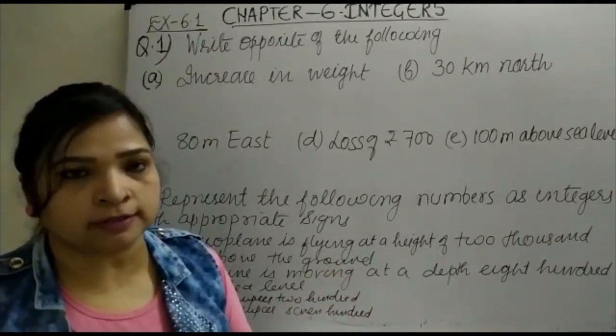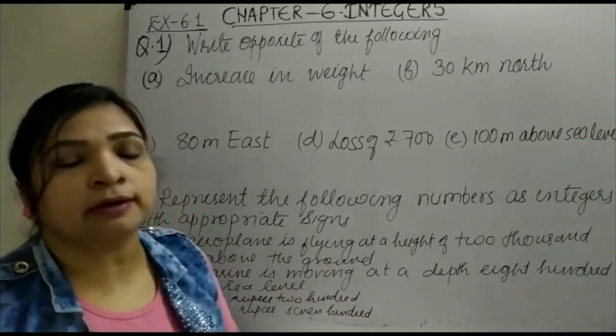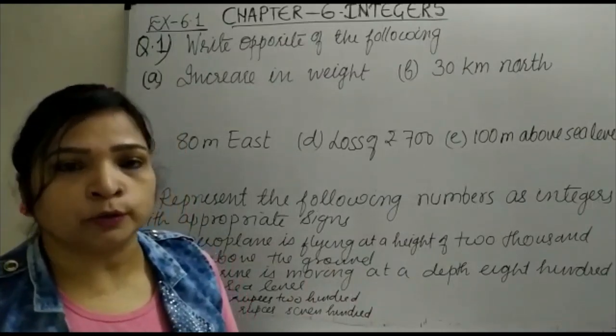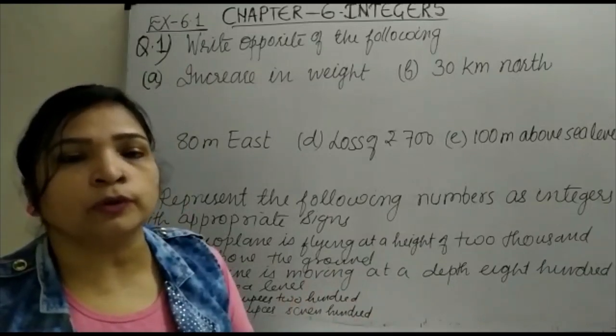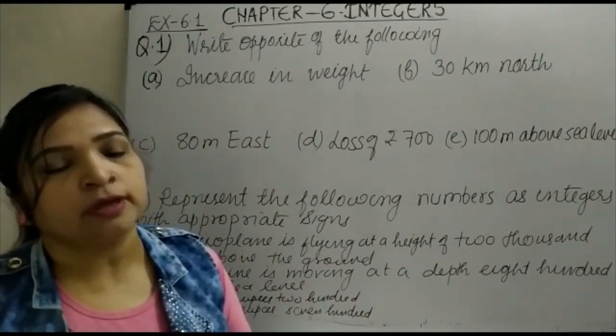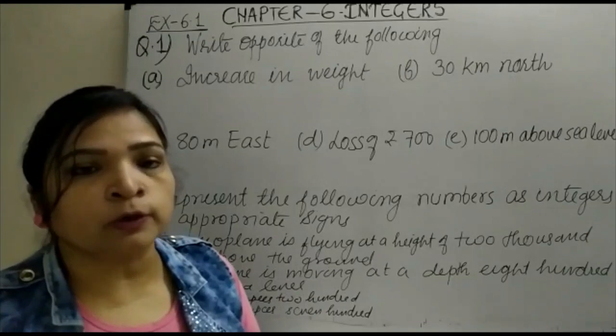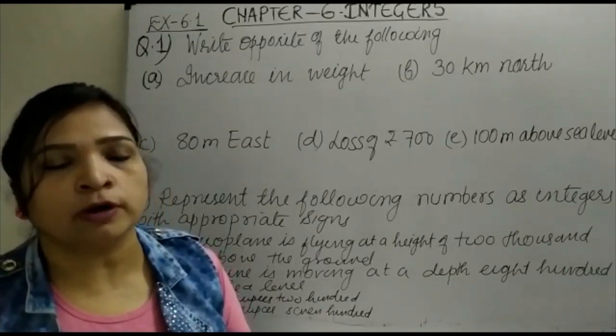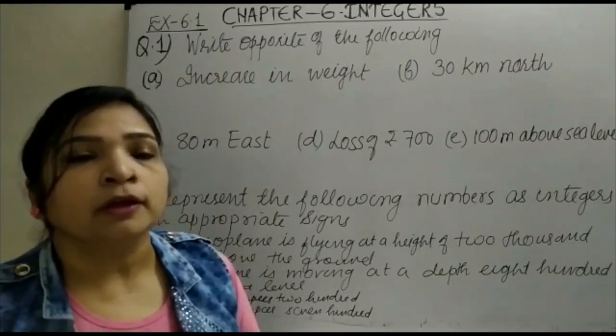You all have studied counting numbers. Your counting numbers start from 1, 2, 3, which are also known as natural numbers. Then when you include 0 in these natural numbers, it becomes whole numbers. So what are whole numbers? 0 plus natural numbers.